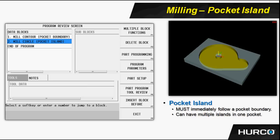In the example we see here, we see a mill contour block as a pocket boundary in block one. Block two is a mill circle as a pocket island. The only rules necessary to remember when doing pocket islands is that they must immediately follow a pocket boundary. I can have as many islands as I need, but they all must immediately follow a pocket boundary.